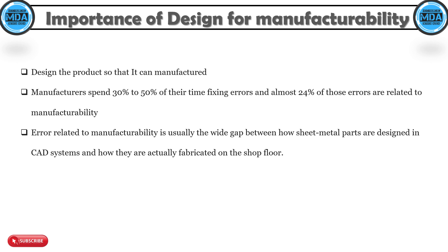The reason behind these manufacturability errors is usually the wide gap between how sheet metal parts are designed in the CAD system and how they are actually fabricated on the shop floor. If a CAD engineer develops a 3D model for a sheet metal product but is unaware of the fabrication tools used for production, errors in manufacturing will definitely occur.